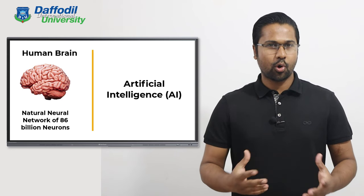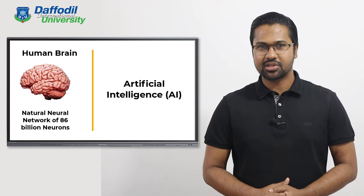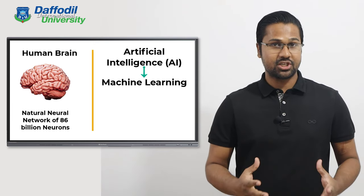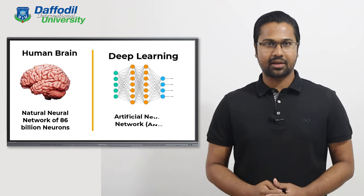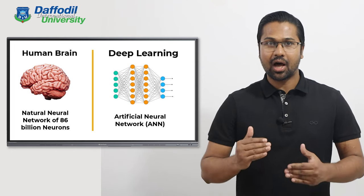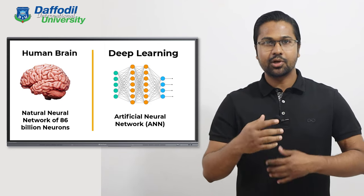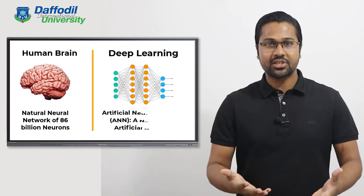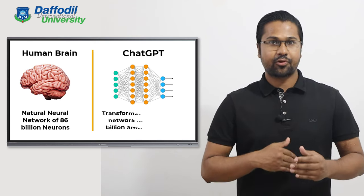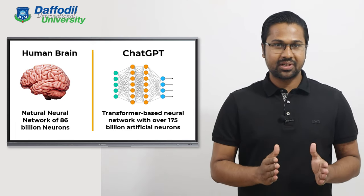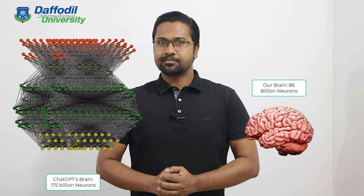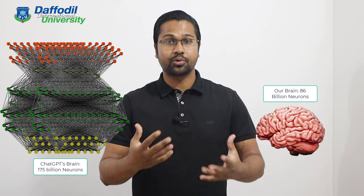It is no longer just an undergraduate level course — it has become a full-fledged four-year bachelor's degree program. Now the question is: why are we talking about AI instead of how to use ChatGPT? A popular branch of AI is machine learning, and a sub-branch of machine learning is deep learning. Artificial neural networks are at the heart of deep learning. The ChatGPT is a transformer-based neural network with over 175 billion artificial neurons. This is our brain, and this is ChatGPT's brain.